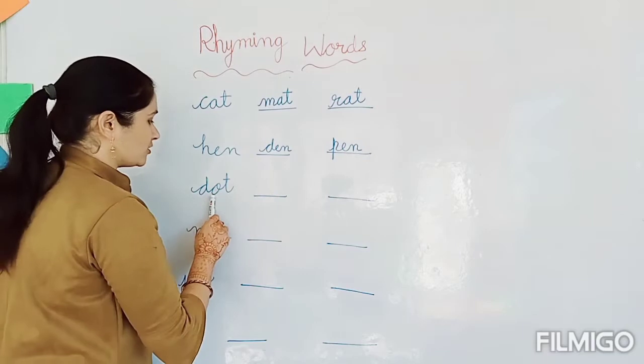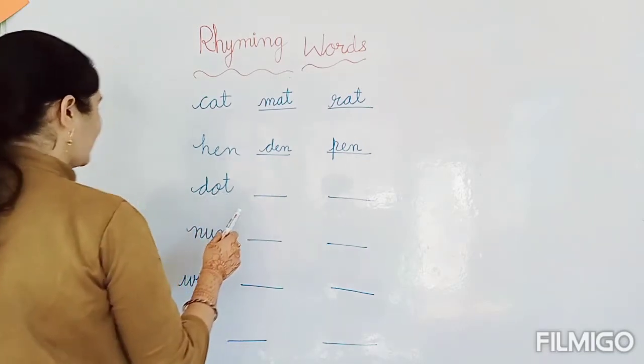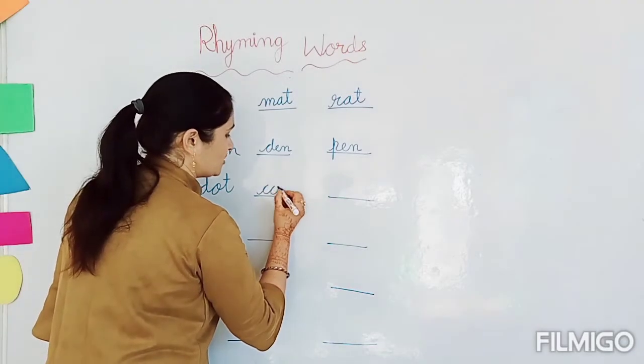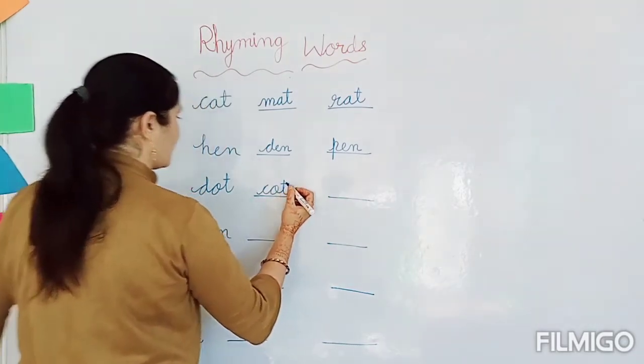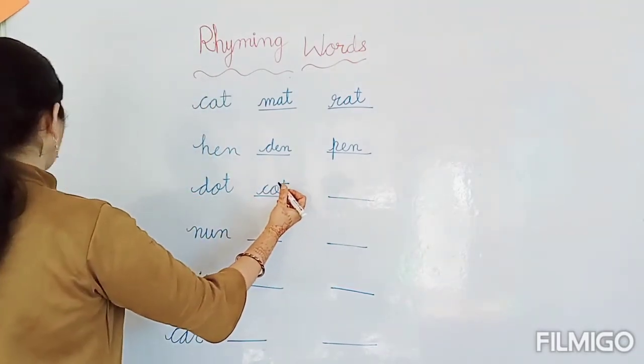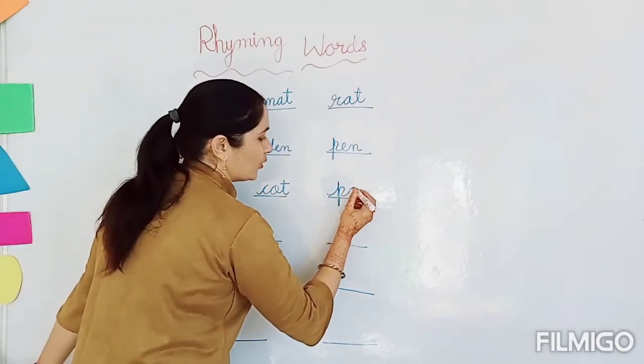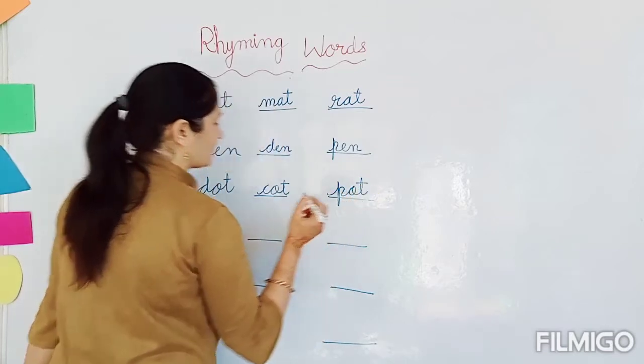Next. Dot. Okay? Similar sound. Dot. Cot. C-O-T. Cot. Okay? Next. Cot. Yes. Pot. P-O-T. Pot. Okay?